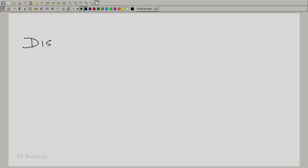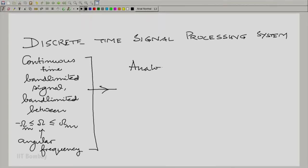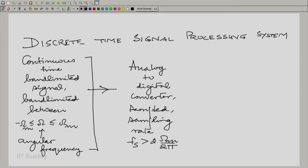Let us put down the structure clearly. A discrete time signal processing system does the following: it takes a continuous time band limited signal, band limited to angular frequency capital omega m. This is sampled in an analog to digital converter, sampled with a sampling rate according to the Nyquist principle.